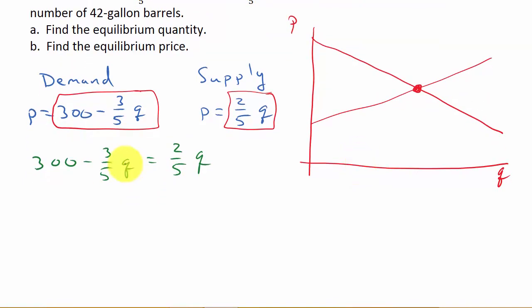Let's solve for Q. If I add (3/5)Q to both sides, that's 300 equals (2/5) plus (3/5), which is (5/5) or just 1. So Q equals 300. This is part A.